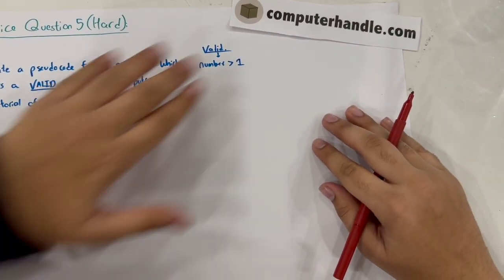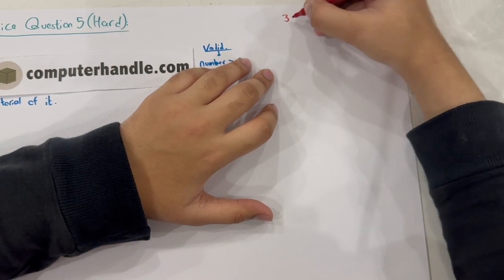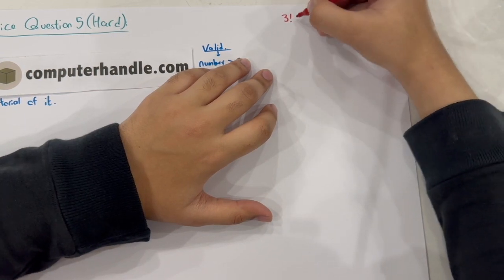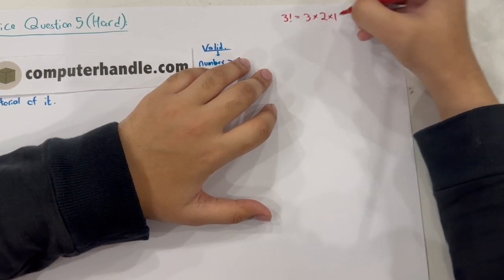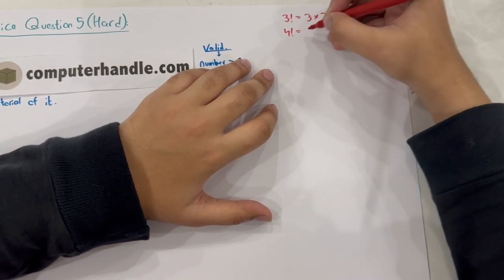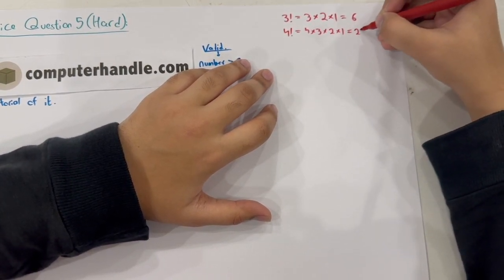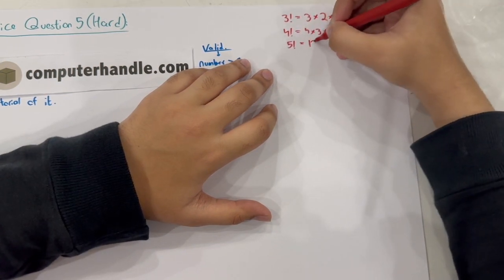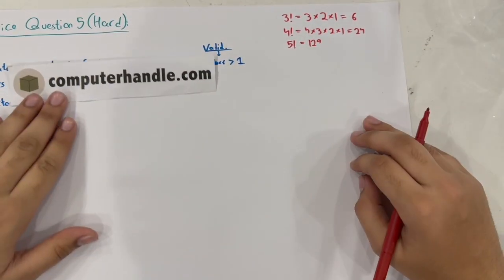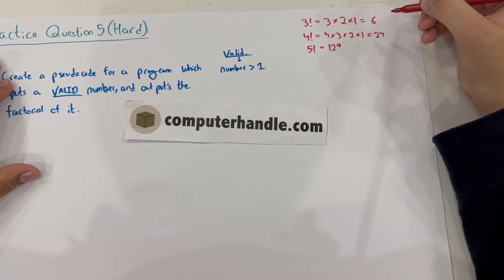I'm going to quickly revise what factorial is. 3 factorial is denoted by the exclamation sign after the number, and it means the value of 3 into 2 into 1, which is 6. 4 factorial is 4 into 3 into 2 into 1, which is 24. And 5 factorial is 120, and so on. The question is that we input a number and the program should calculate the factorial, the final value of it.